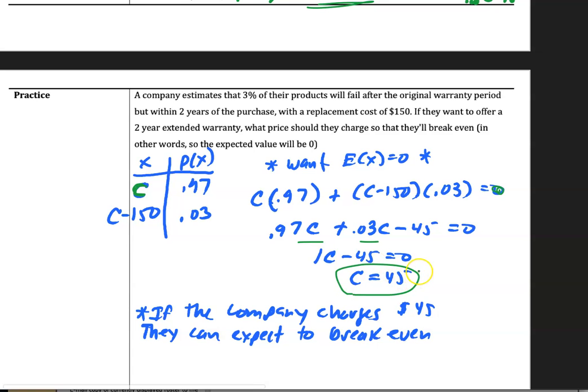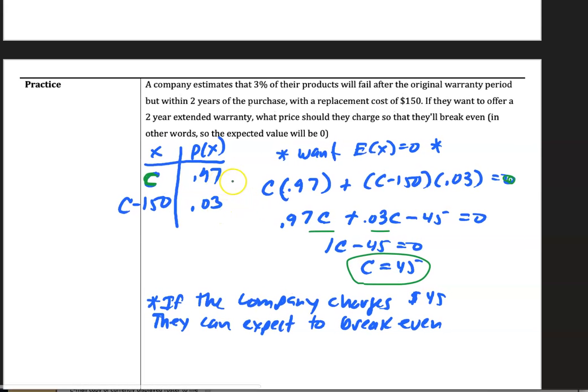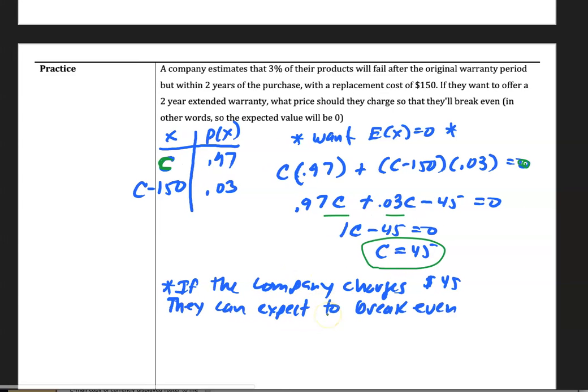So if they want to break even with their warranty, meaning that 3% of the time people are going to use it, 97% of the time they won't, the company charges $45 and they can expect to break even.